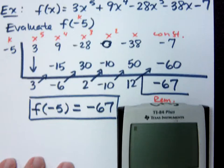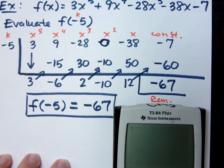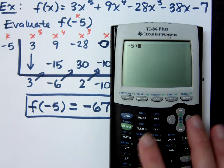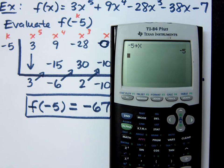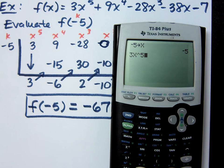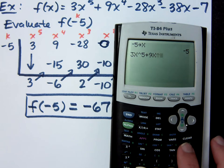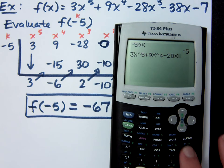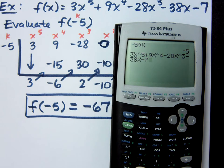I know you may have a hard time believing that, so let's check the calculator. If I store negative 5 into x and type in the function — 3x to the 5th plus 9x to the 4th minus 28x to the 3rd minus 38x minus 7 — it's supposed to give me negative 67. And the calculator says it equals negative 67.